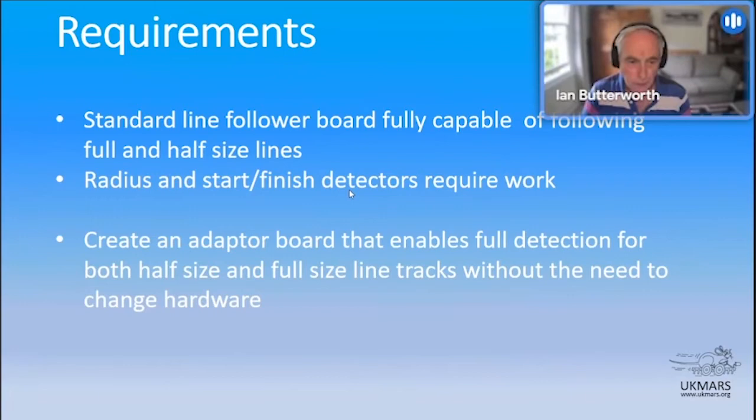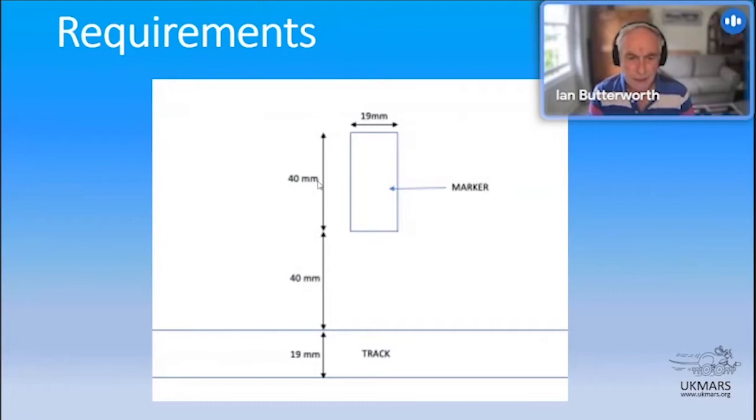So I just set myself a challenge really of creating an adapter board that could be added to the standard UK Mars line following board and manage both full size line and half size line without having to fiddle around with the hardware. This looks a bit fuzzy. It's because it's blown up from the rules. But this is basically the configuration of a full size line, a 19 millimeter track with now 40 millimeter markers 40 millimeters away from the side of the line.